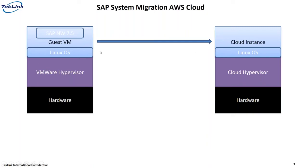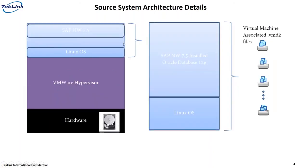This is a summary picture of the source system and target system. The source system is on the left side, the target system is on the right side, giving you a glimpse into the different layers. The source system is a vanilla SAP NetWeaver 7.5 system. The slide shows its architecture — SAP NetWeaver 7.5 installed on Linux, SP12, running on a VMware hypervisor, which eventually runs on the hardware.